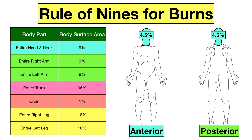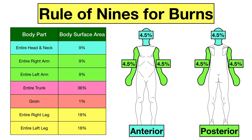The entire head and neck is 9%, so the face and anterior neck make up 4.5% and the posterior head and neck make up 4.5%. The entire right arm is 9%, so the anterior right arm has a body surface area of 4.5% and the posterior right arm has a body surface area of 4.5%. The left arm is the same, where the anterior and posterior sides each make up 4.5%. The entire trunk is 36%, so the anterior trunk is 18% and the posterior trunk is 18%. You can break down the anterior trunk further: the chest is 9% and the abdomen is 9%.